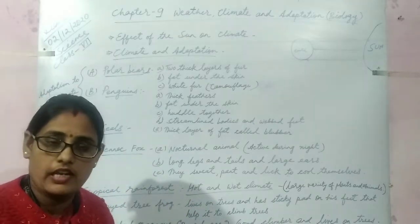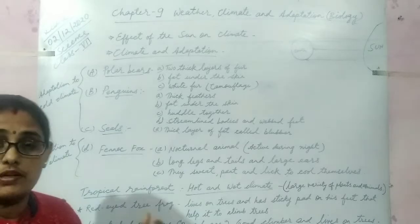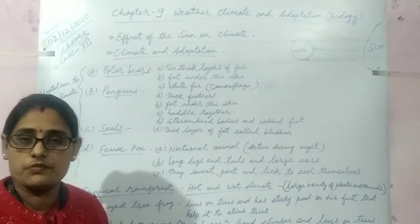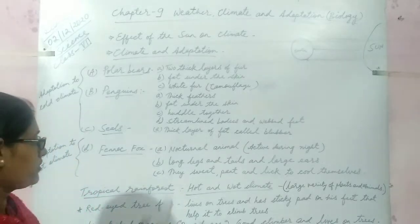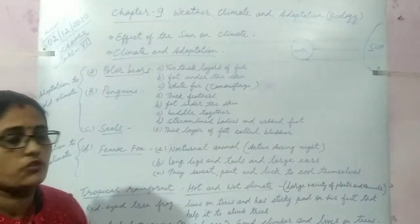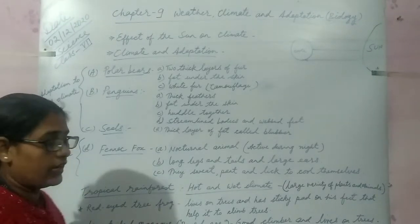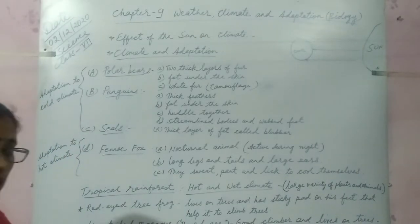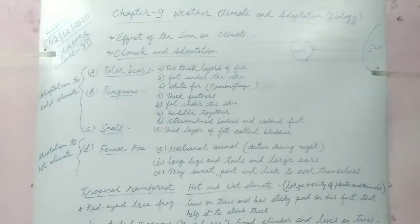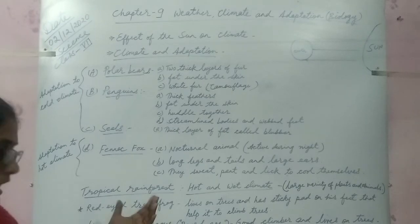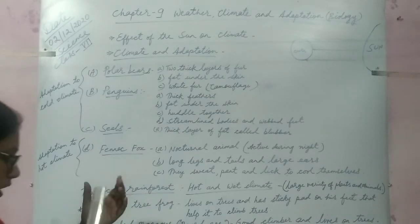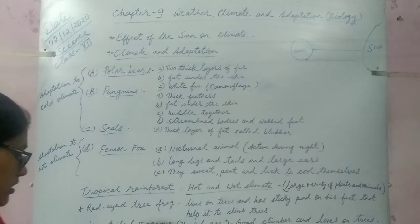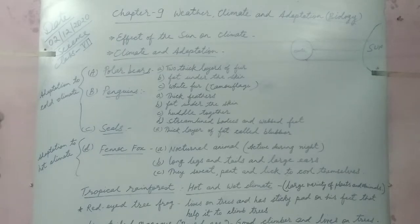They come out during the night in search of food but during day time they hide themselves in shady places to protect themselves from heat of sun. They have long legs and tails and large ears. The ears have blood vessels near the surface. The air flowing across the ears cools the blood which in turn cools the body.